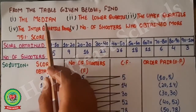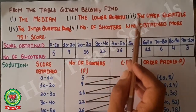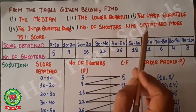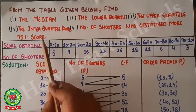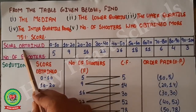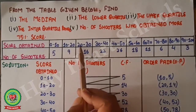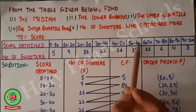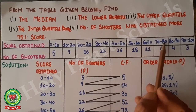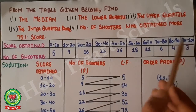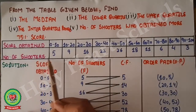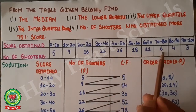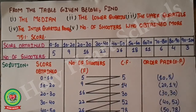From the table given below, find: first, the median; second, the lower quartile; third, the upper quartile; fourth, the interquartile range; and fifth, the number of shooters who obtained more than 75% score. The score intervals are 0–10, 10–20, 20–30, 30–40, 40–50, 50–60, 60–70, 70–80, 80–90, and 90–100. The corresponding number of shooters are 5, 9, 16, 22, 26, 18, 11, 6, 4, and 3.